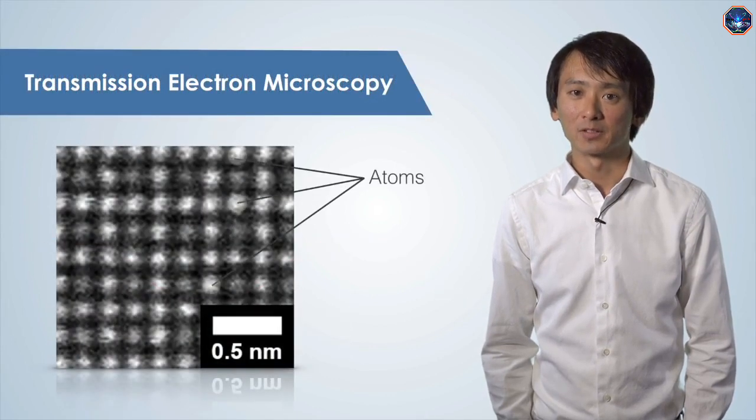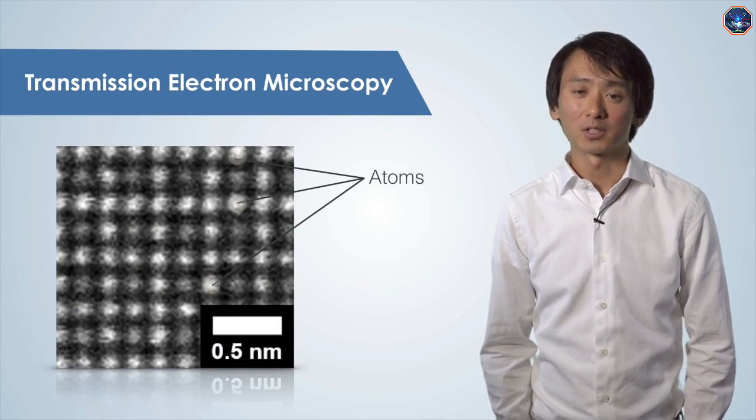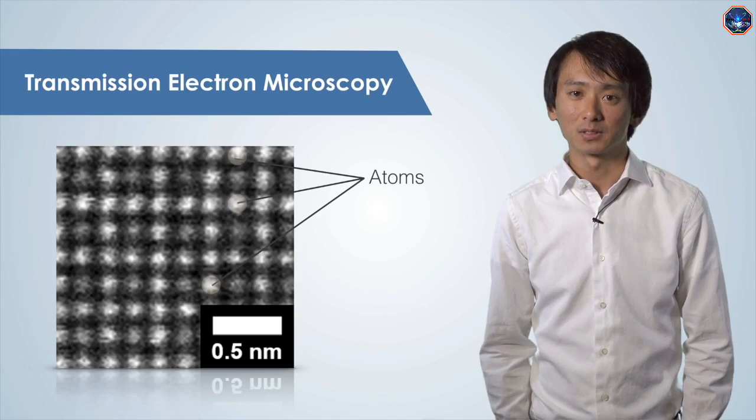Here is a TEM image of a metal alloy. Note that we are able to resolve individual atoms. Since we are observing things at the atomic level, it is very important to image in a controlled environment.